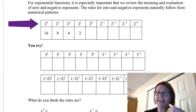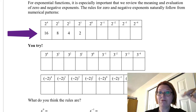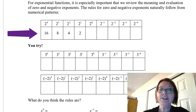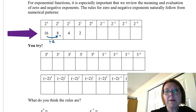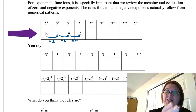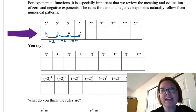We're moving down by one in the power with every column we move across the page. In the second row we're evaluating each: two to the fourth is 16, two to the third is 8, two squared is 4, two to the first is 2. The question is: what is two to the zero? If you look at the pattern — to get from 16 to 8 we're dividing by 2, from 8 to 4 we're dividing by 2, from 4 to 2 we're dividing by 2 — so for every step we divide by 2.